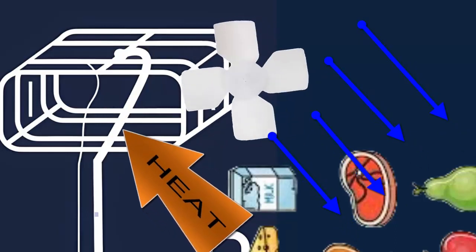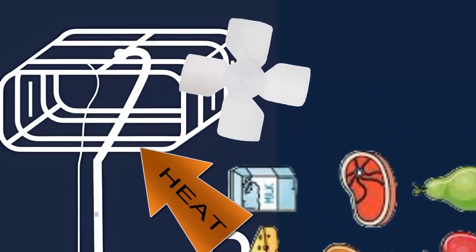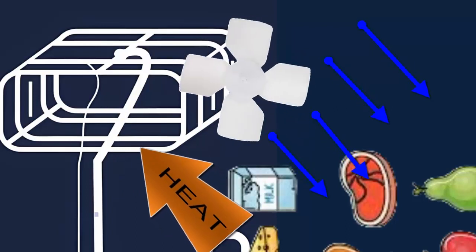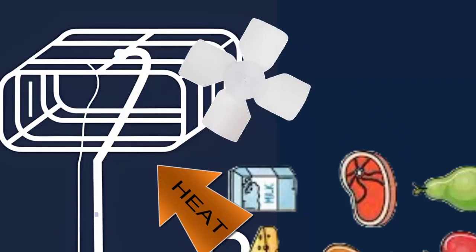As the refrigerant absorbs the heat from the food, they cool down, allowing for preservation. The heat from the food goes to the R404A refrigerant in the evaporator, causing the refrigerant to change from a liquid to a gaseous state.